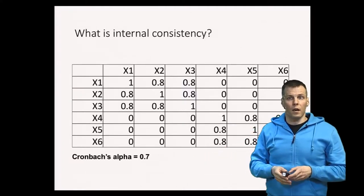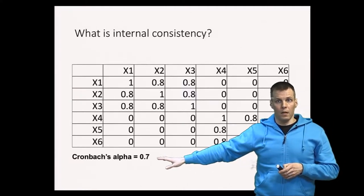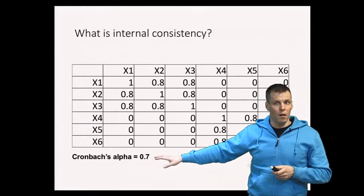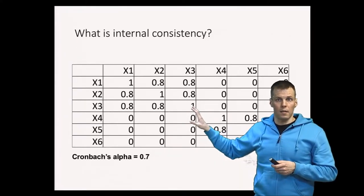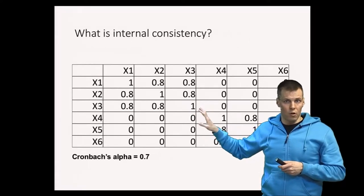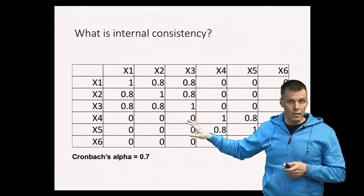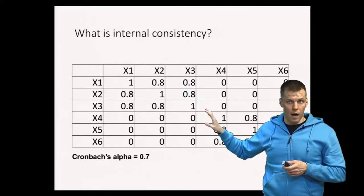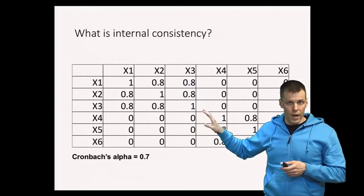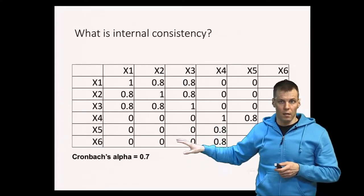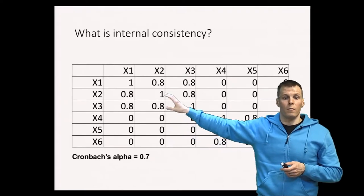Yet if we calculate coefficient alpha using this correlation matrix we get the value of 0.7. So the fact that we got an alpha value that is acceptable for some researchers doesn't guarantee that the scale is a unidimensional internally consistent one. The important thing here is that internal consistency is something that alpha assumes and it is based on that assumption. High alpha doesn't guarantee that you have an internally consistent unidimensional scale.